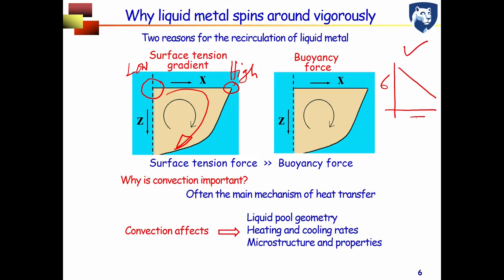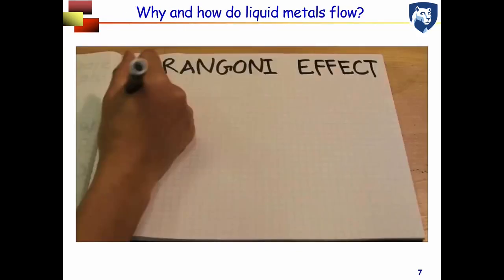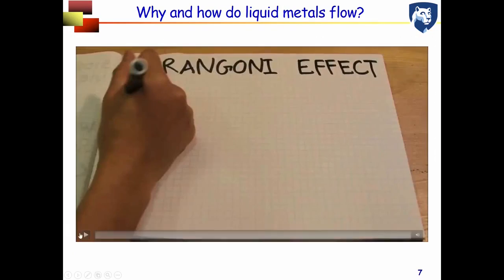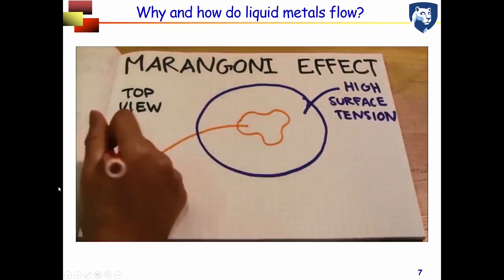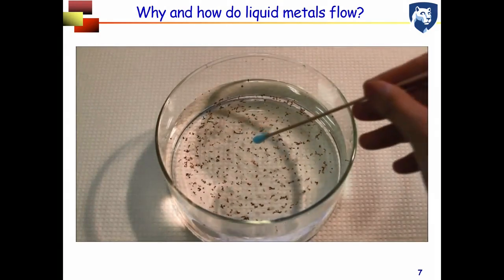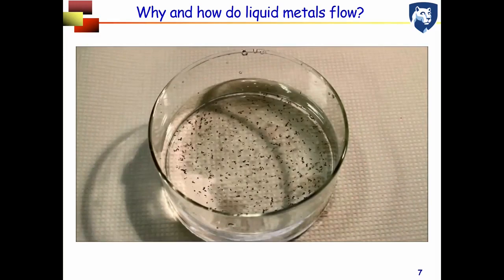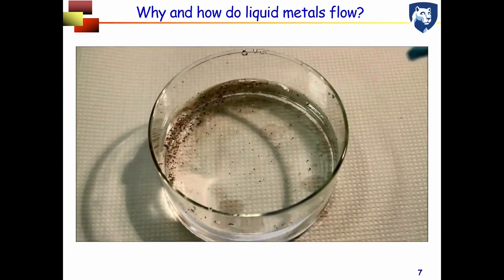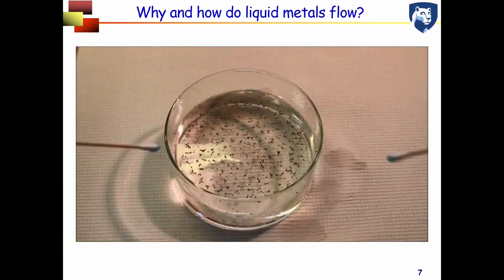To simply explain the Marangoni effect, there is a simple experiment you can do at home. The Marangoni effect says that fluid wants to flow from areas of lower surface tension to areas of higher surface tension. Adding pepper to water and then placing a soap-coated cotton swab into the water shows the pepper flakes moving away from the point where the soap was added — the soap breaks the surface tension and drives Marangoni flow. In additive manufacturing, instead of soap, it is the temperature difference that drives the flow.